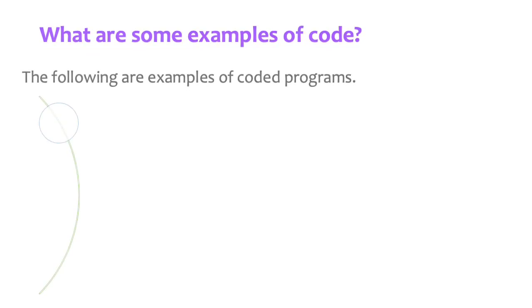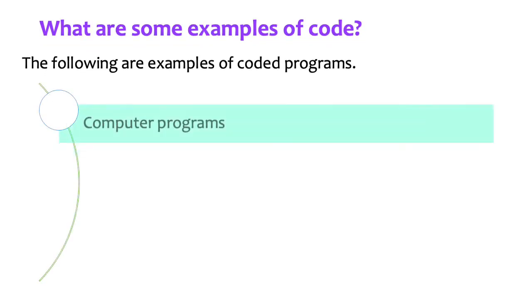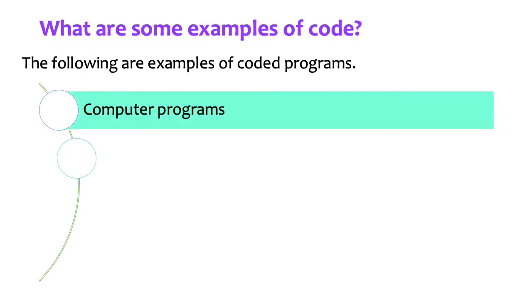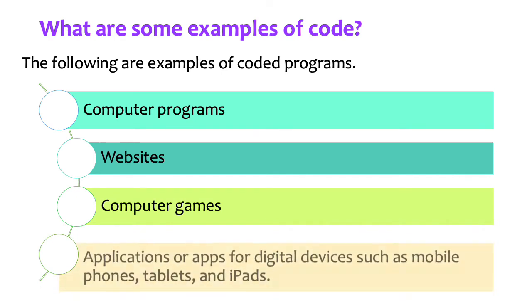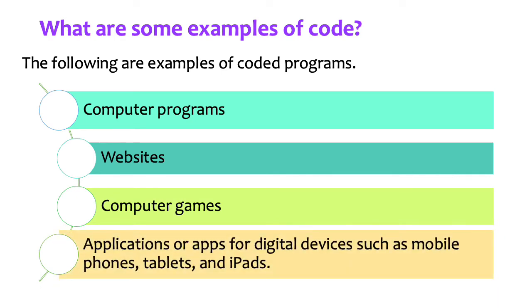What are some examples of code? The following are examples of coded programs: computer programs, websites, computer games, and applications or apps for digital devices such as mobile phones, tablets, and iPads.